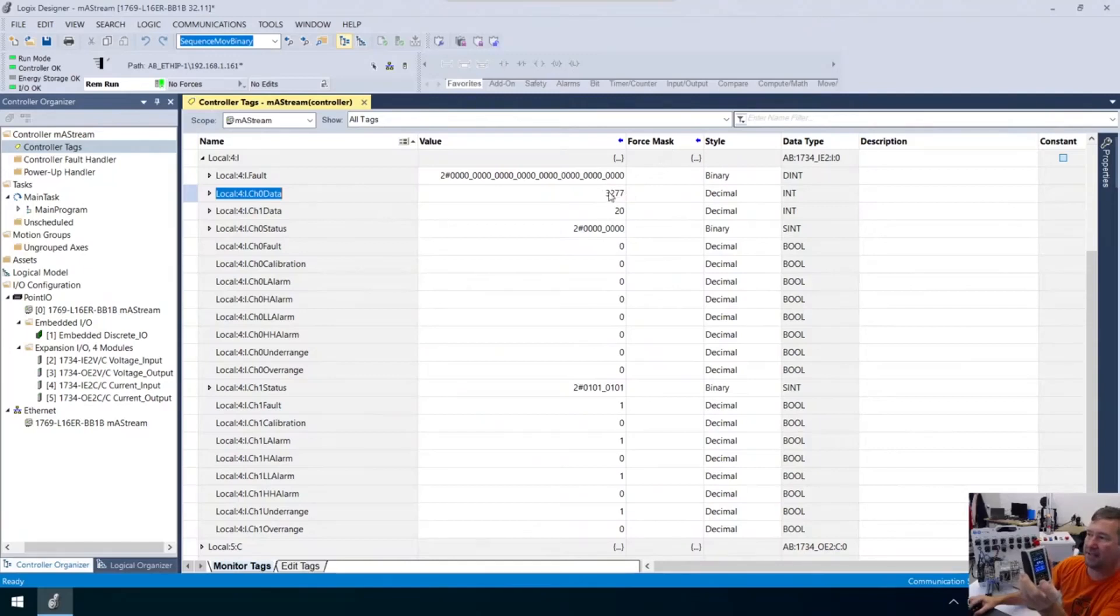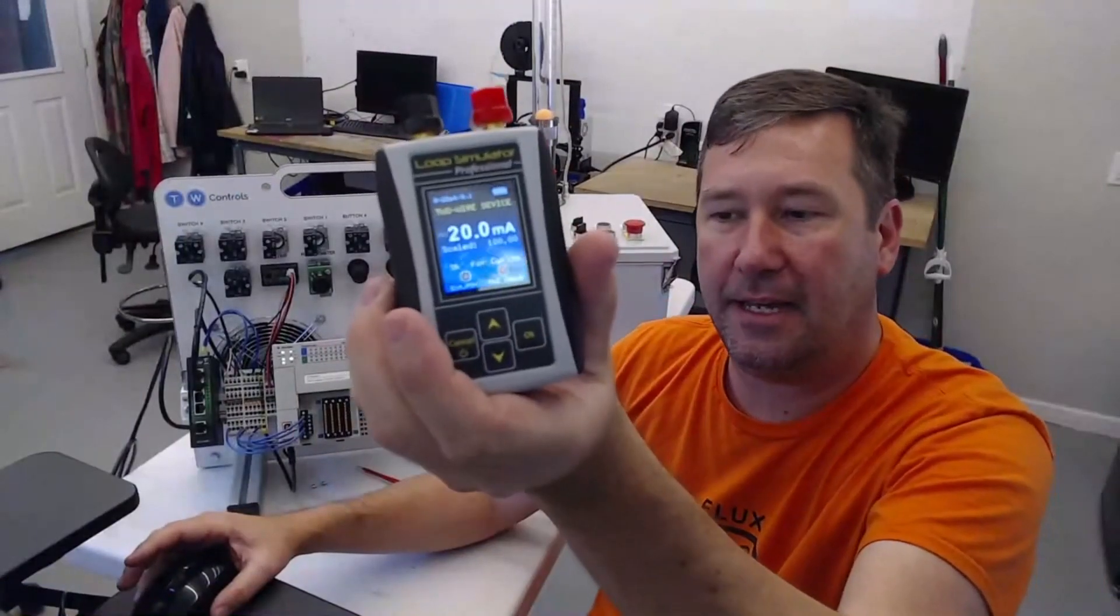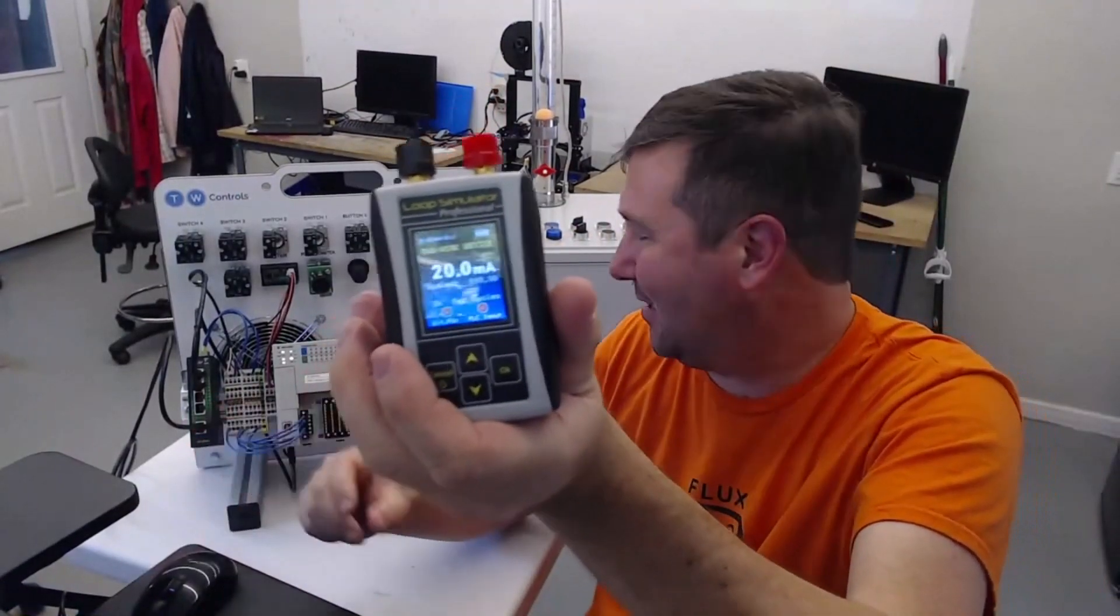All right, so four, look, we have almost the same value 3277. That was roughly what we had last time. And we're going to bring it up to 20. And we've got roughly the same thing 16384. So at 20 milliamps, we're showing that same value of 16384.